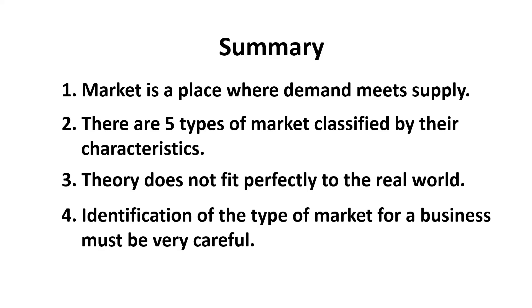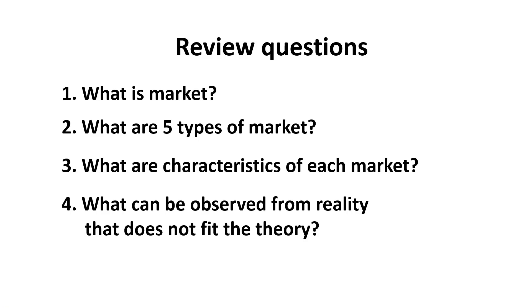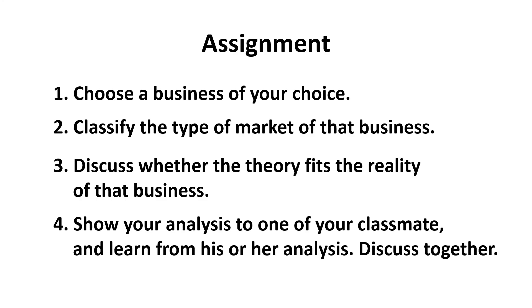In summary, today we have learned that market is a place where demand meets supply, and we have five types of market classified by characteristics. We have also learned that theory does not fit perfectly to the real world, and identification of the type of market for a business must be very careful. To make sure that you understand all the content today, please answer these review questions: What is market? What are the five types of market? What are the characteristics of each market? And what can be observed from reality that does not fit the theory?